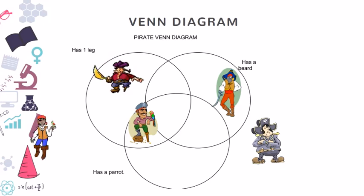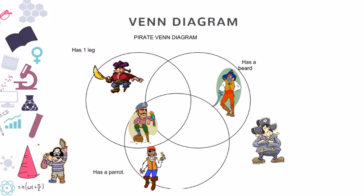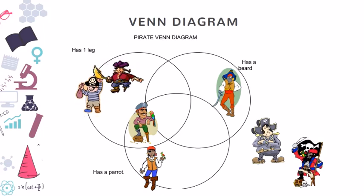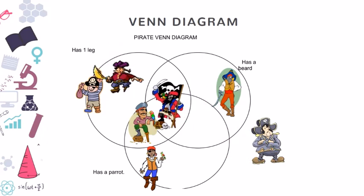There's a lady. She has a parrot. She doesn't have a beard. This big guy has a beard, he has a parrot, he has also one leg. He belongs to three of the categories. He will be in the center because he has all properties, all categories.